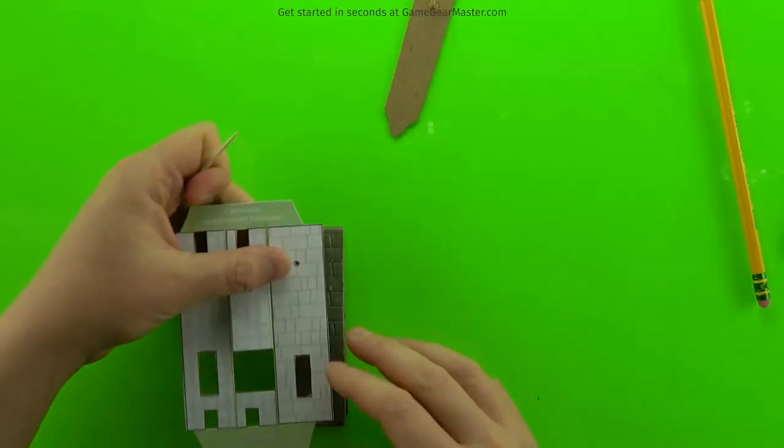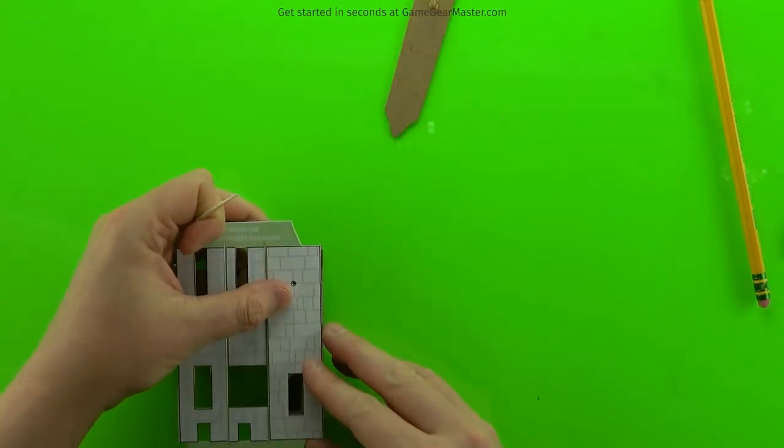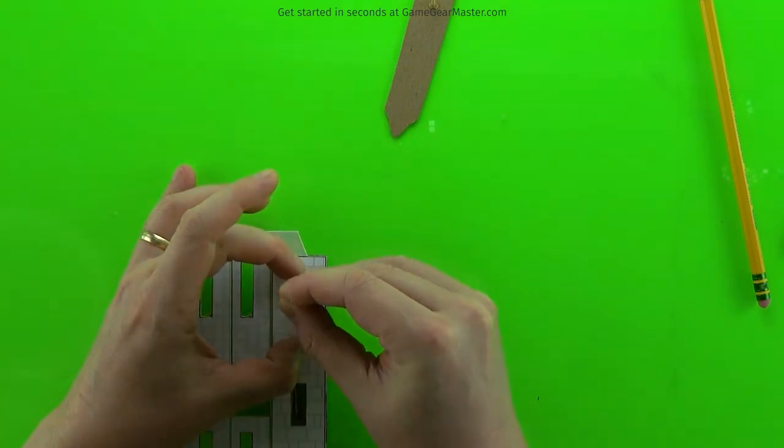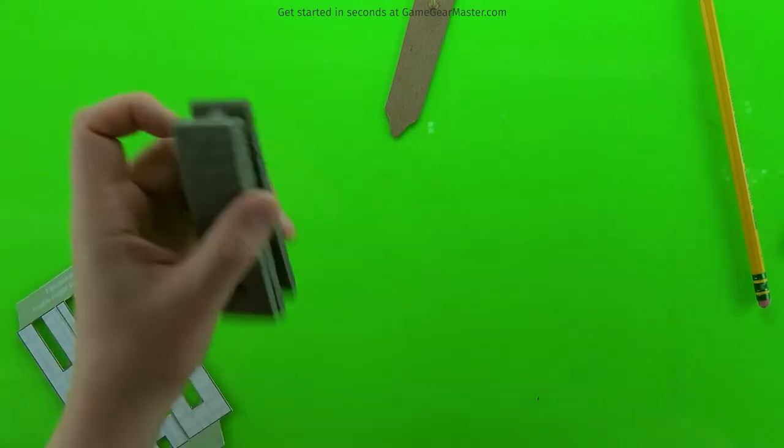And then while that's drying, I'm going to make the hole for the Decorator in one of my connectors. You just do that by laying the template over the connector and then punching through it with the toothpick.